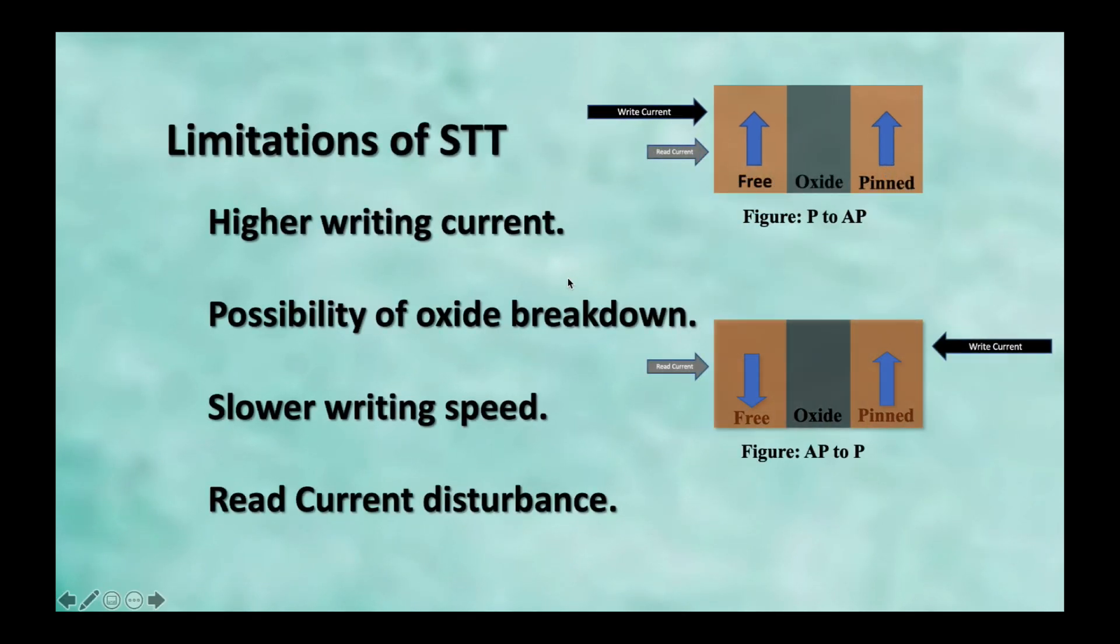And, then there are several limitations of STT which include read current disturbance. So, as we can see that here is the write current and here is the read current to sense the magnetization state of the MRAM. So, read and write current in STT are parallel to each other and there are chances that they produce some kind of read current disturbance. Second is slow writing speed because the current has to pass through this oxide layer before doing any change in magnetization state.